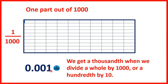The thousandths digit is the third digit after the decimal point. Remember, we have our ones before the decimal point, then after the decimal point we have tenths, hundredths, and then thousandths. We can show a place value counter for thousandths, and though it's written as a fraction, we could have written 0.001 on this place value counter.